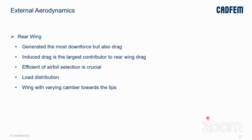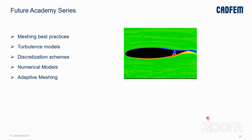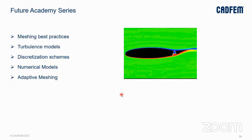We have come to the end of this presentation. Some tentative topics planned for future academy series presentations include meshing best practices, turbulence models, discretization schemes, numerical models, and adaptive meshing. We will go deep into each of these over the next few presentations. Do let us know in the feedback if you have any topic you would want us to cover as part of this series. Thank you, and I think we can take some questions and answers.